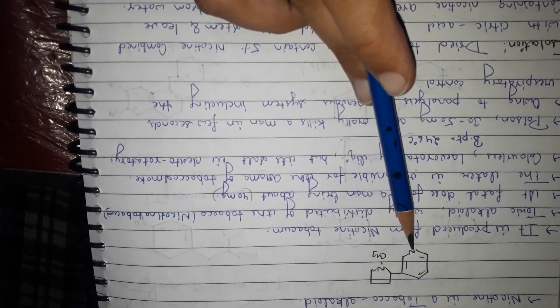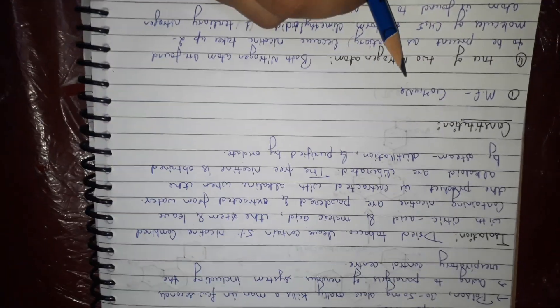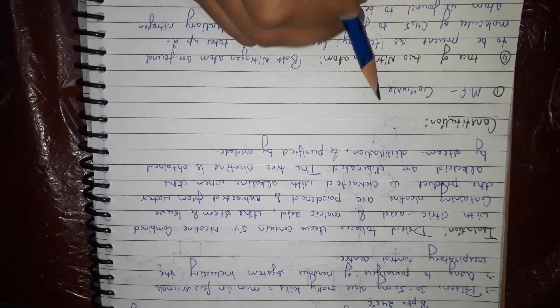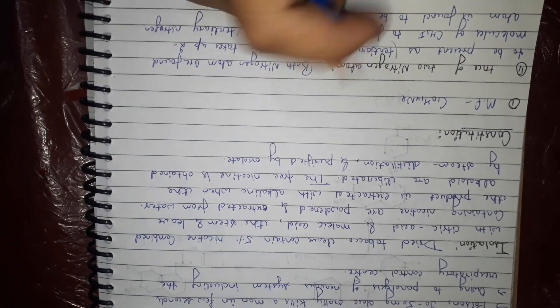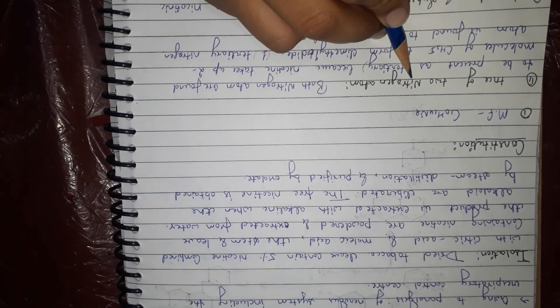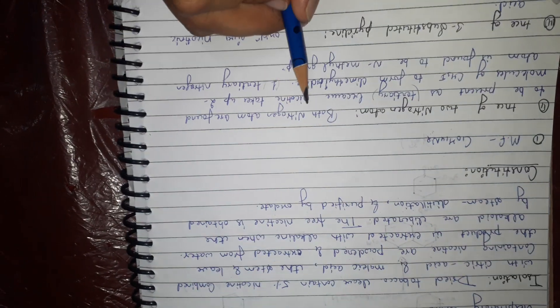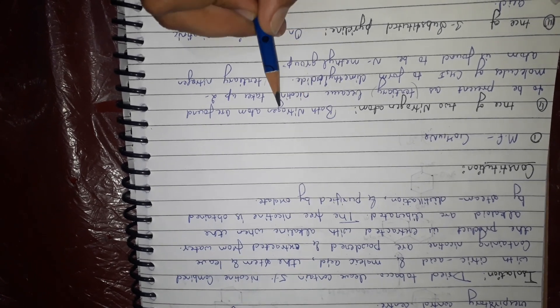We can write C10H14N2 by counting the number of carbons and hydrogens. The presence of N2, the presence of nitrogen atoms, is confirmed. Both nitrogen atoms are found to be present as tertiary.